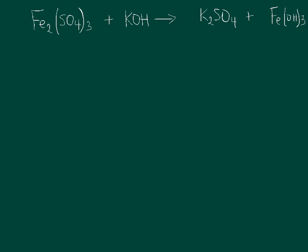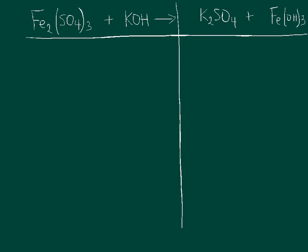The first thing I'm going to do is split this equation up into the product side and the reactant side, and list all the different elements in each side. Both sides have the same elements, but I'm also going to list the amounts of each of those elements.